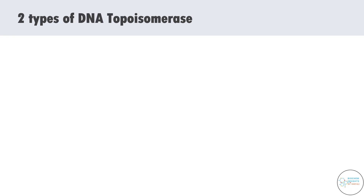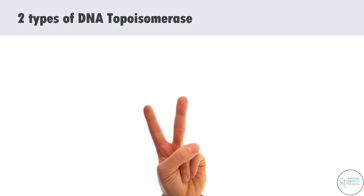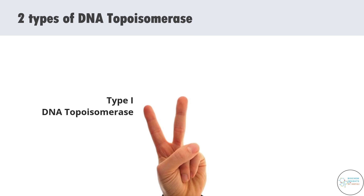There are two types of DNA topoisomerases: Type 1 DNA topoisomerase and Type 2 DNA topoisomerase. Let's see how these two topoisomerases work differently from one another.